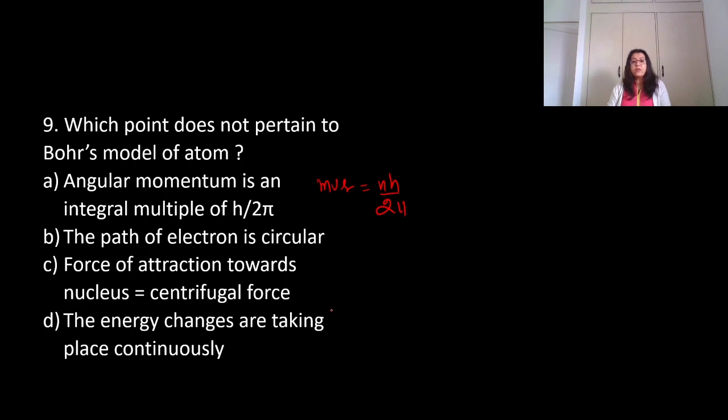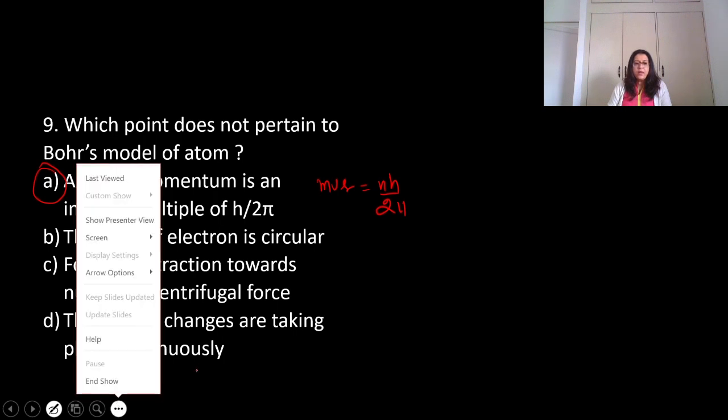Which point does not pertain to Bohr's model of an atom? Angular momentum is an integral multiple of h upon 2 pi - this is correct because mvr equals nh upon 2 pi. The path of electron is circular - correct. Force of attraction towards nucleus is centrifugal force - correct. The energy changes are taking place continuously - this does not pertain to Bohr's model. Energy changes only occur when electron moves from one energy shell to another. So the energy will be delta E equals E2 minus E1. The correct option is D.